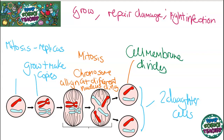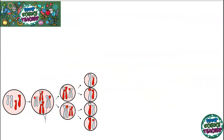An important thing to remember is that in each adult cell you have 46 chromosomes. You will always have 46 chromosomes and they will always be the same in each adult cell. There are two types of cells that do not undergo mitosis — they undergo a different type of cell division called meiosis.